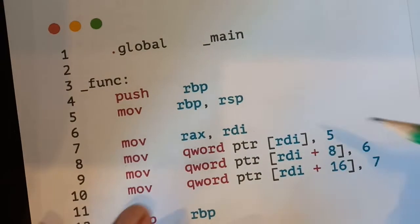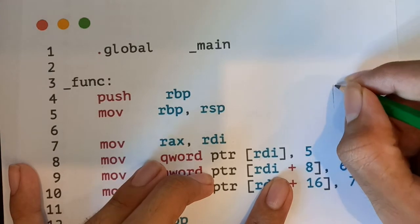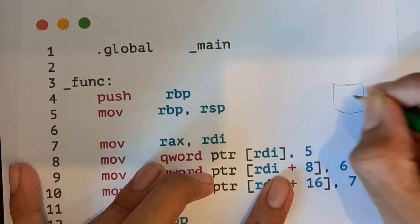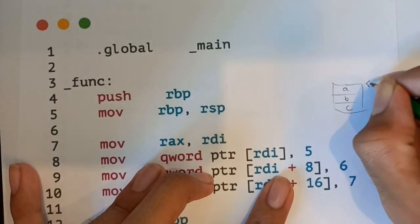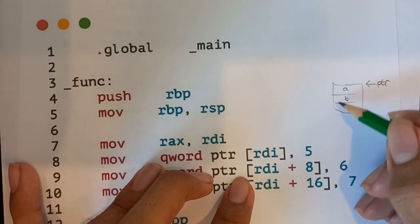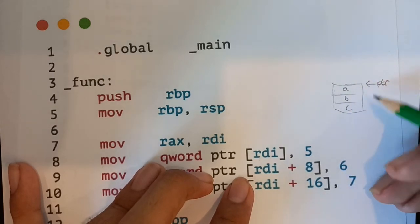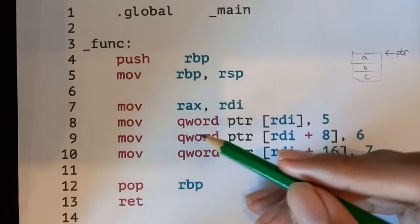So the start of the struct, if I just draw out how the layout of the struct is in memory, it will just be like this, a, b, c. This will be the pointer to the struct. So the pointer to a will be the pointer to the struct. The pointer to b will be the pointer to struct plus eight. The pointer to c will be the pointer to the struct plus 16, which is what we're doing here.